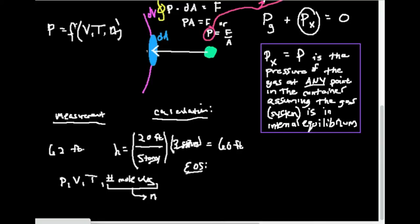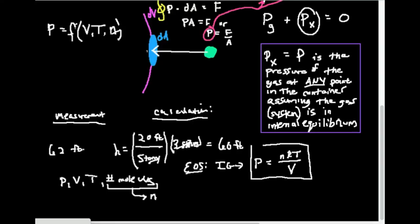For an ideal gas, the equation of state is: pressure equals nRT divided by V — n is moles, R is the gas constant, T is temperature, and V is volume. This is the ideal gas equation of state. It tells you that if you know the volume, temperature, and number of moles, you can calculate the pressure. We'll discuss in the next video that this represents ideality, not reality — it's an approximation that may or may not be very accurate.